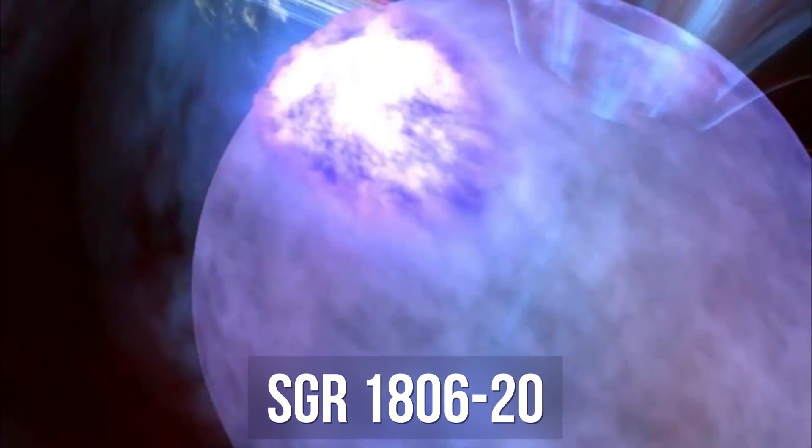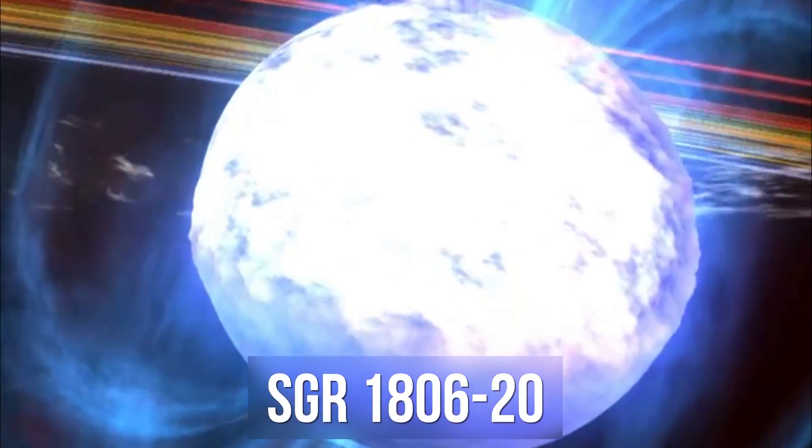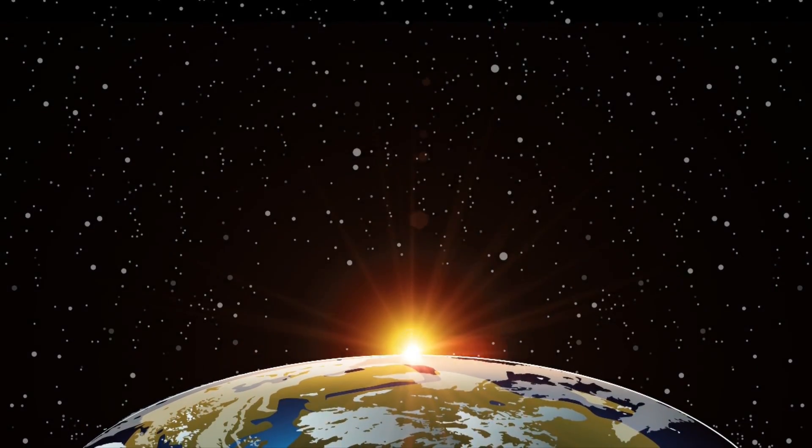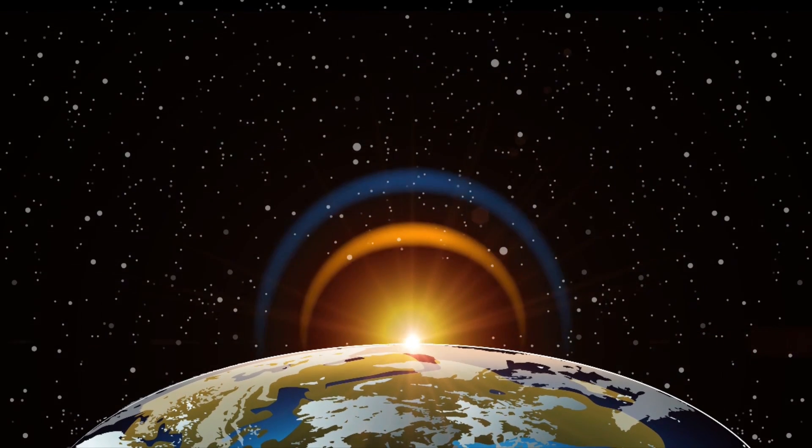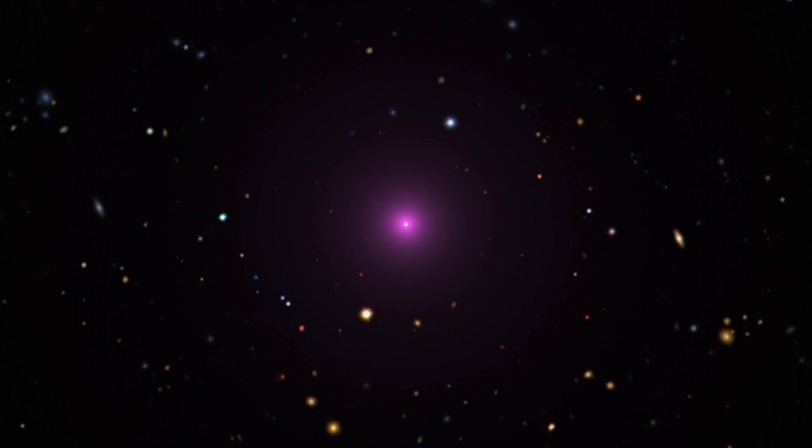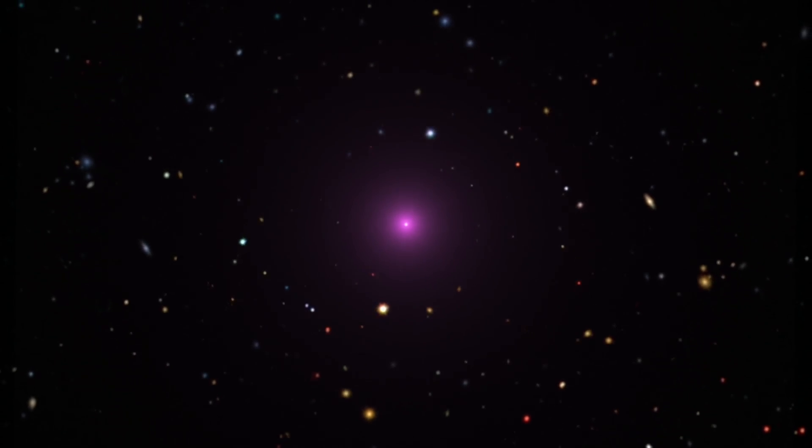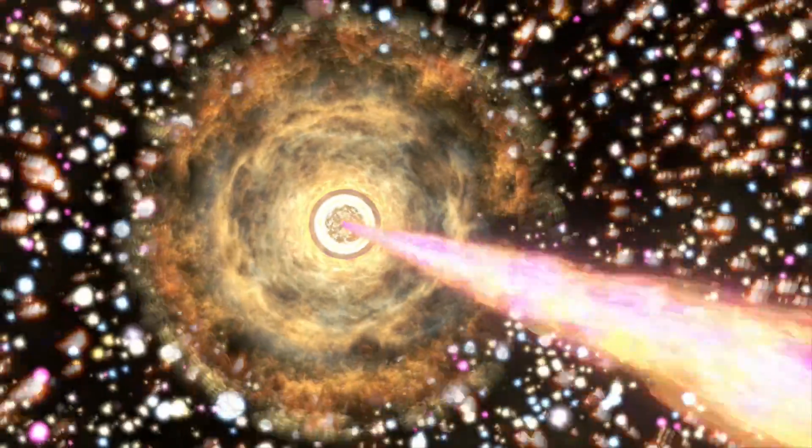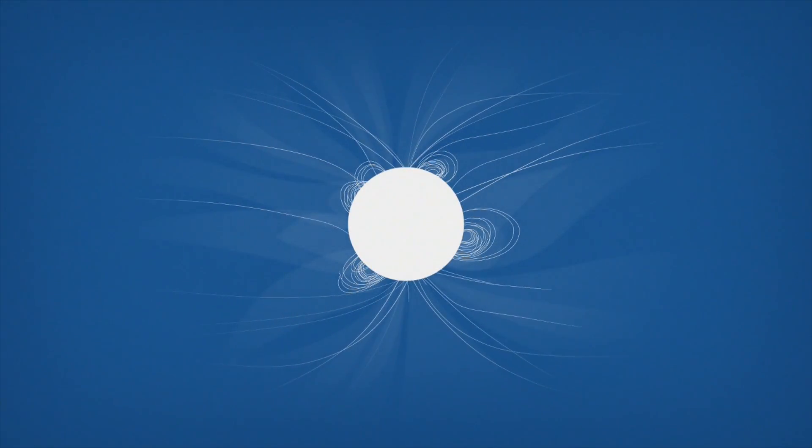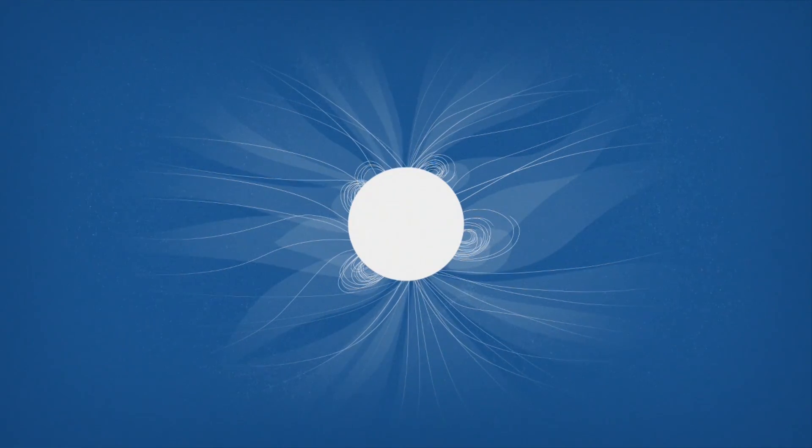The most powerful of these starquakes ever observed was from a magnetar called SGR 1806-20, about 50,000 light years away from us. In 2004, the radiation from the explosion caused by this starquake reached Earth, and it was the brightest event that originated outside of the solar system known to have ever been witnessed by humans. It is believed to also be the largest explosion observed in our galaxy since the 1604 supernova that was observed by Johannes Kepler. In just one-tenth of a second, this starquake released more energy than the Sun has released in the past 100,000 years.